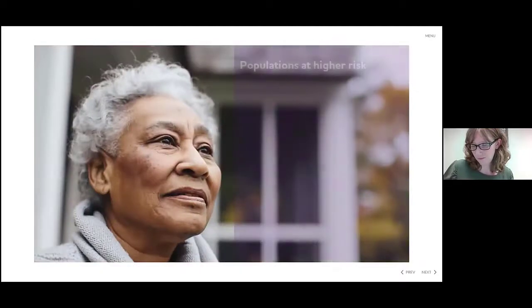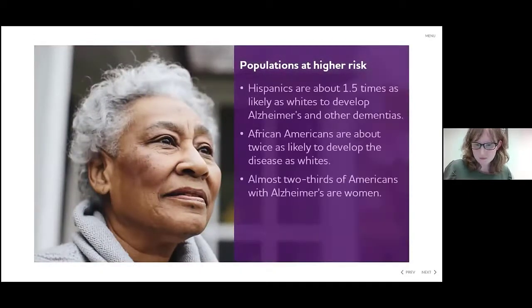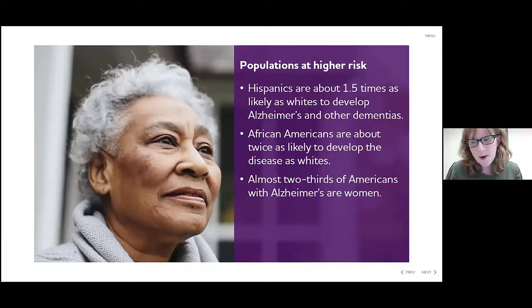When we talk about the genes involved in Alzheimer's, there are two categories: risk genes and deterministic genes. Risk genes increase an individual's risk for developing the disease but do not guarantee they will develop Alzheimer's. Deterministic genes, which are rare for Alzheimer's, guarantee that the person will develop the disease. To be clear: Alzheimer's is not a normal part of aging, but age is the greatest known risk factor.